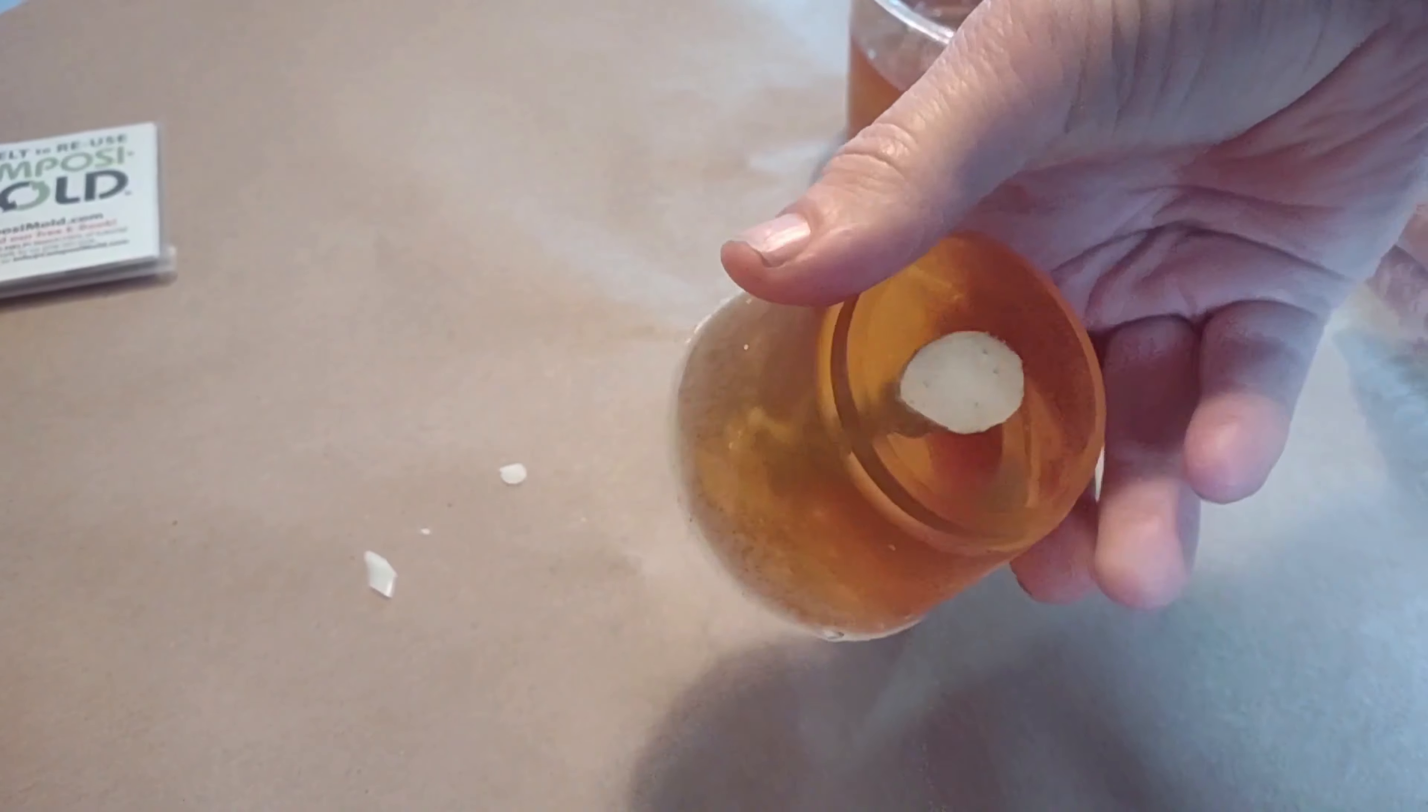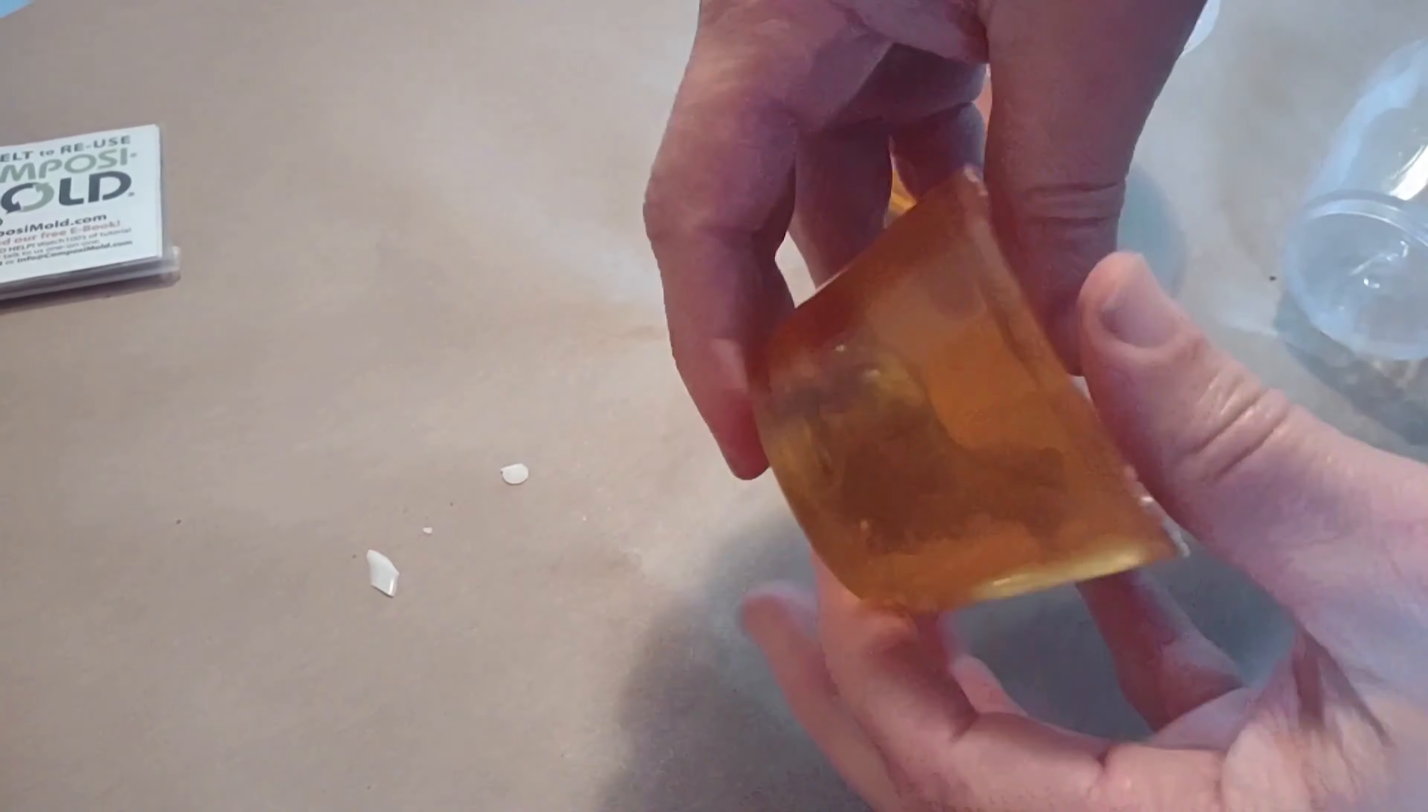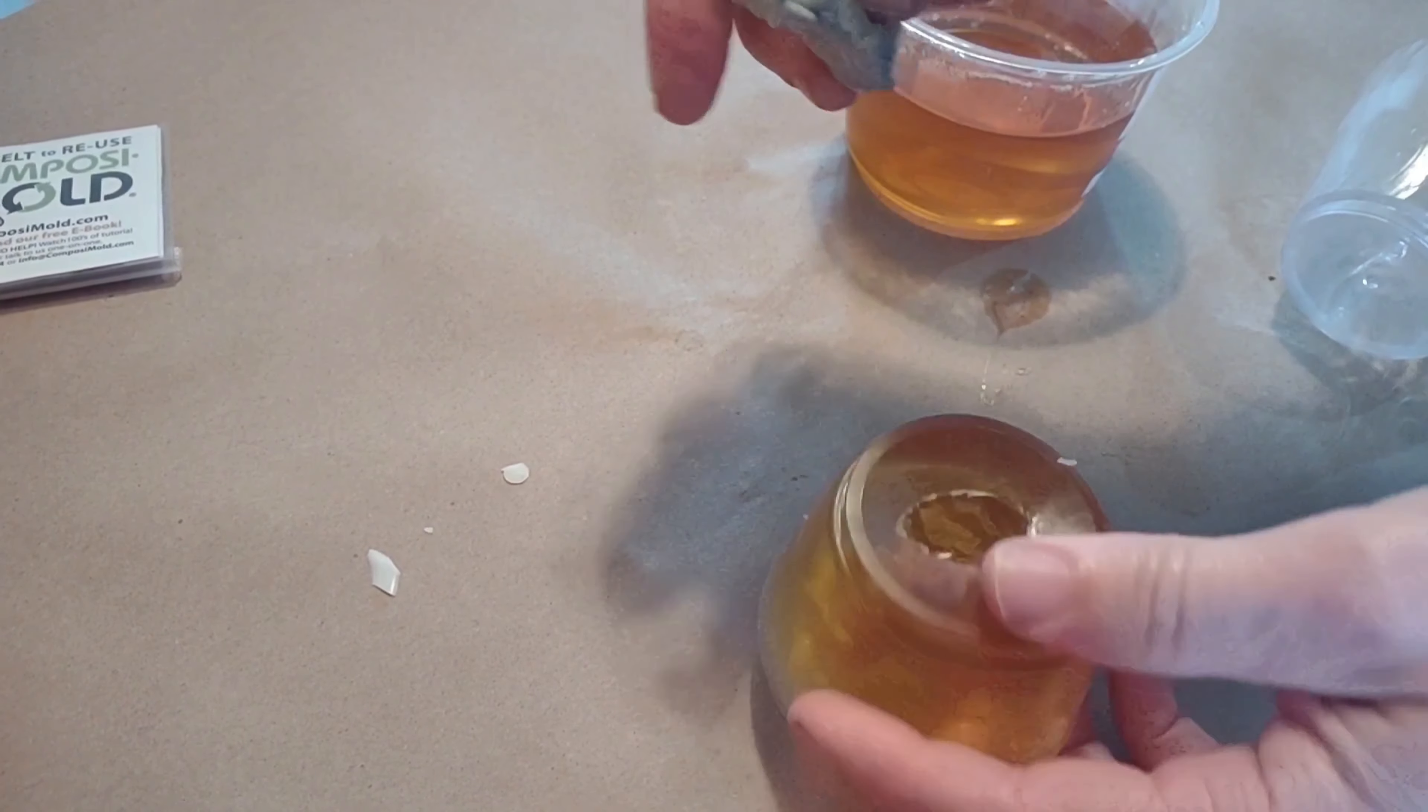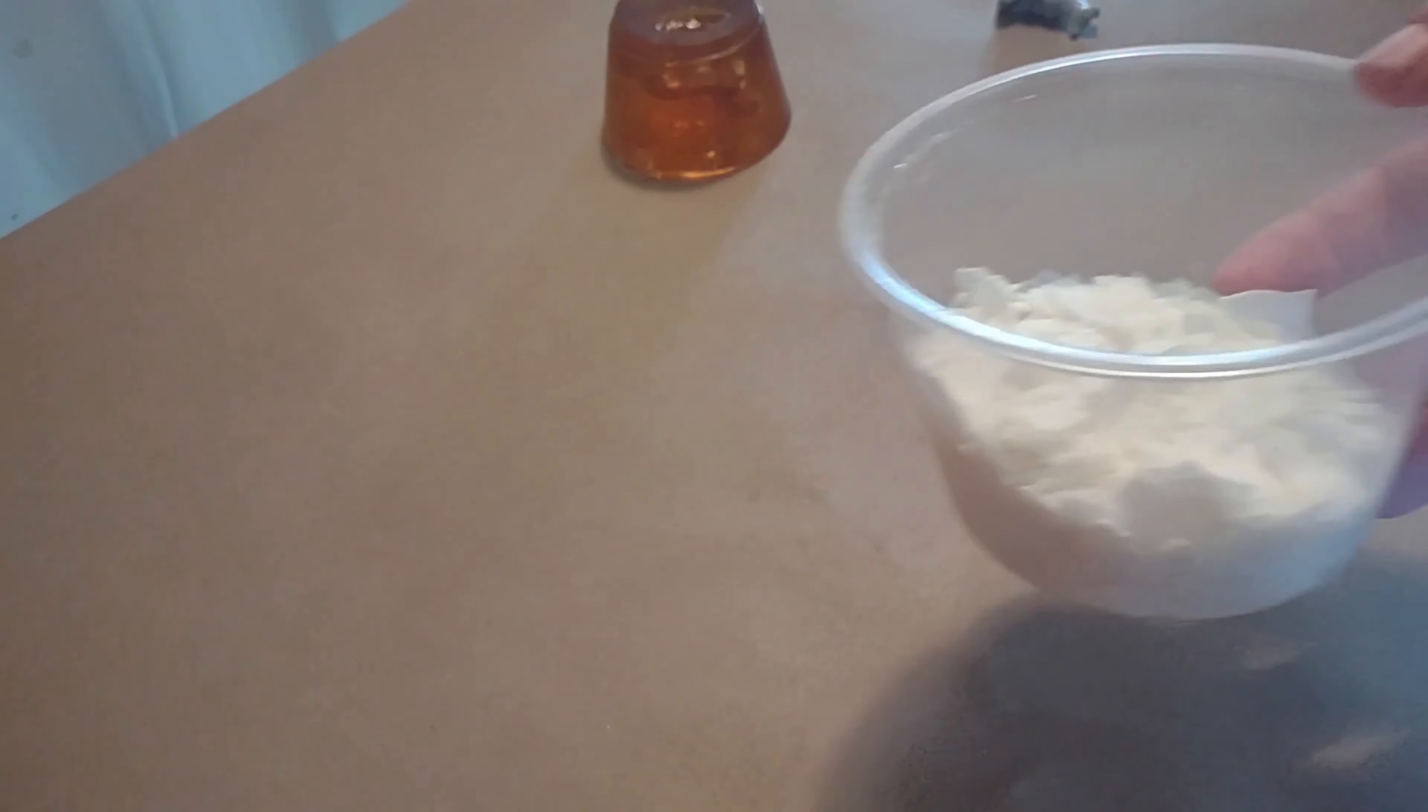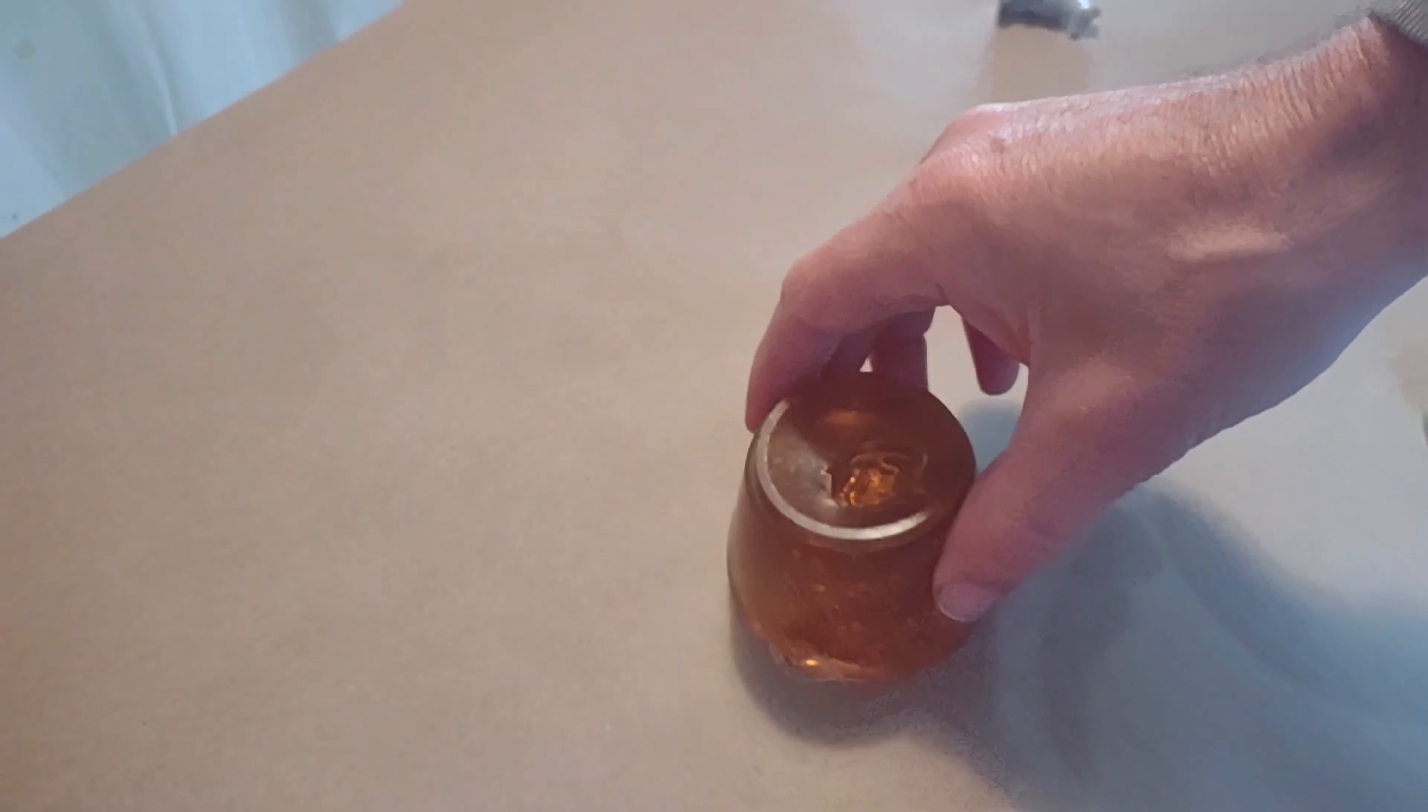The advantages of ComposiMold for this part is that you can continually reuse it to make multiple copies of the same part and then when you're ready you can remelt it to make other objects whenever you want to. Now we're making a wax casting of the original object in the ComposiMold mold. I'm using a soy wax because it has a very low temperature it's microwavable and it's very easy to use and it's also reusable like the ComposiMold.